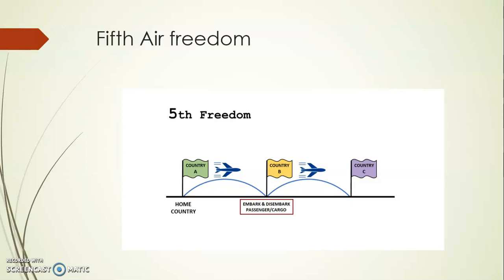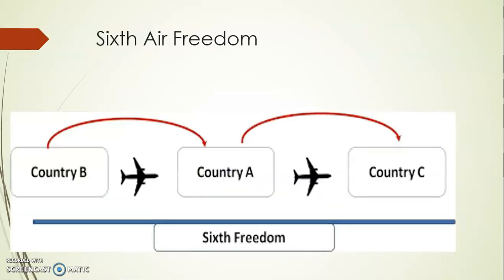The Fifth Air Freedom allows an airline of country A to carry passengers between two different foreign countries. For example, Air India can take passengers from India to France, and then continue to the USA. So some passengers may get off in France and others continue to the USA. Under the Fifth Air Freedom, an airline gets the privilege to serve two different countries on the same route.